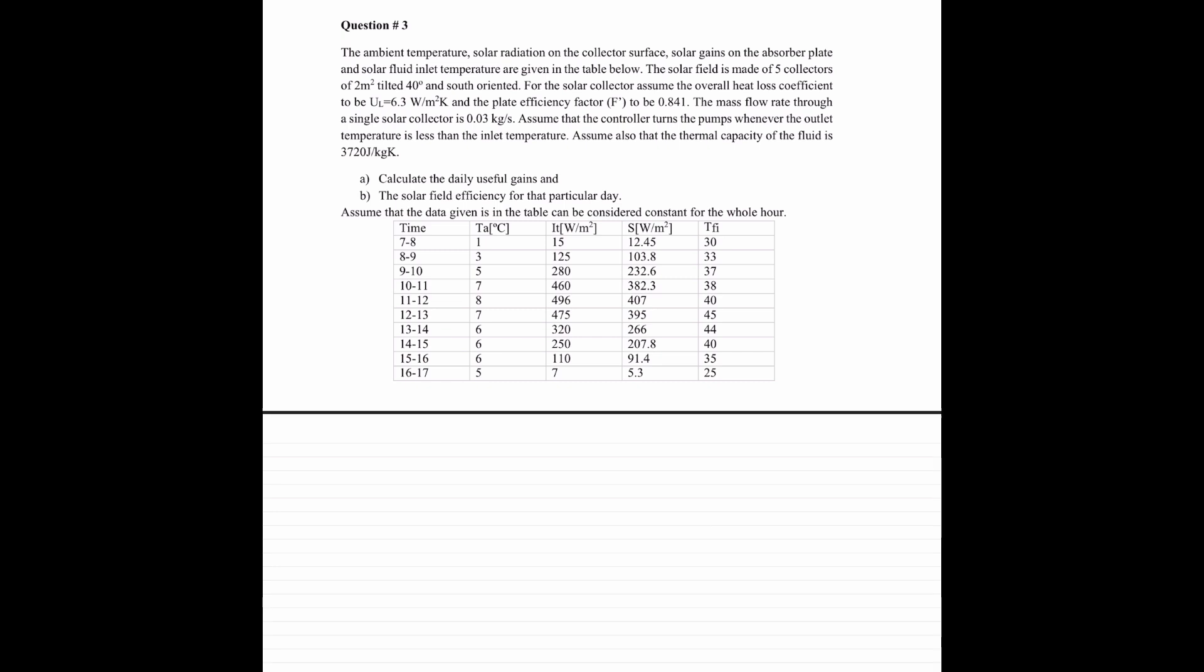Okay. First, let's write the givens, try to figure out what we have. We have five collectors, so n is equal to 5. We have an area of 2 meters squared.